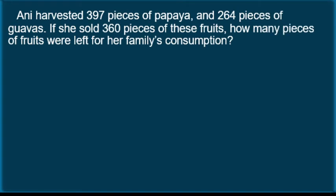Annie harvested 397 pieces of papaya and 264 pieces of guavas. If she sold 360 pieces of these fruits, how many pieces of fruits were left for her family's consumption? You can pause the video and read the problem again.